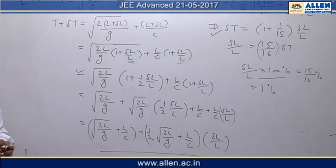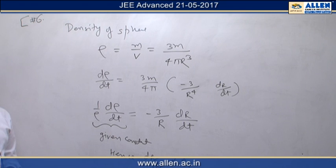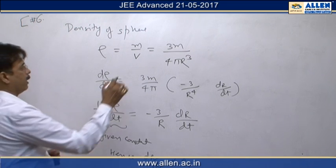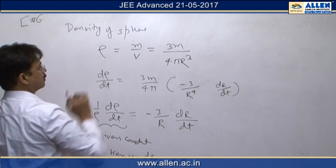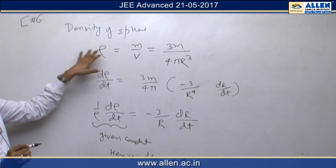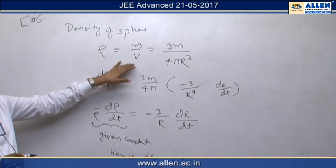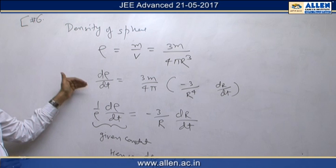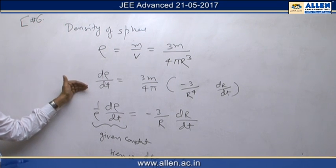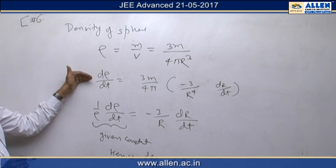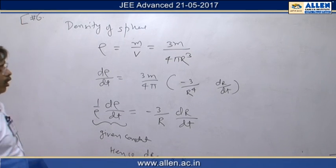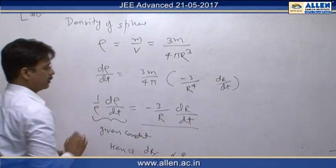Question number 6, in this question there is an expanding sphere and it is given that mass of the sphere is constant, so density of the sphere is mass upon volume. We differentiate density with respect to time and then divide this expression by rho to obtain this value.